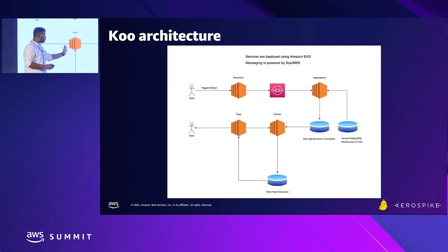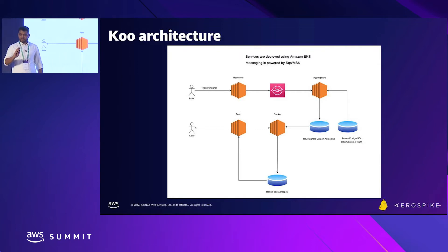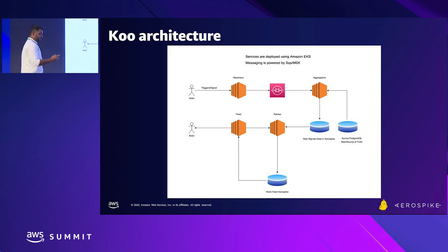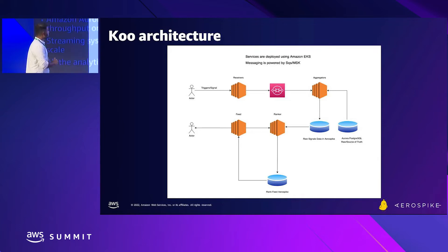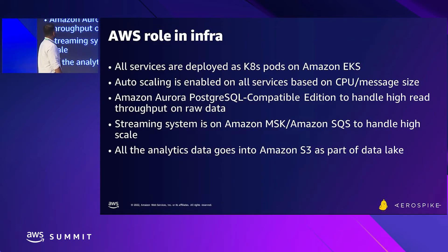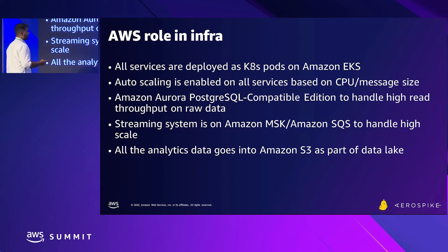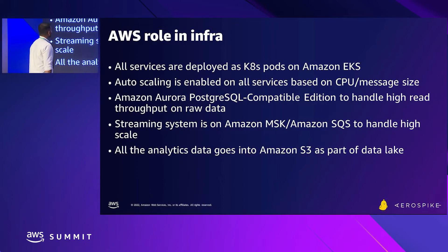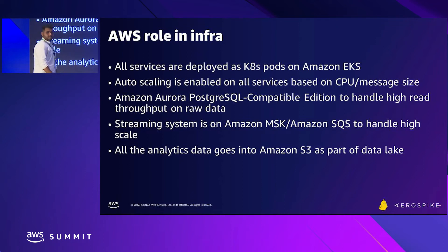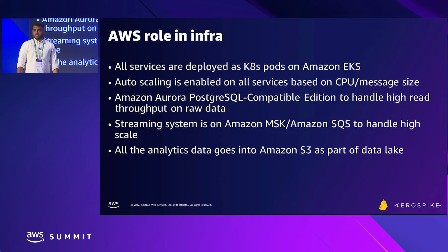The difference between the two Aerospike namespaces: one is all-in-memory, and one is a disk-based hybrid namespace. Once the ranker completes, the feed service displays the data. This is how we achieve near real-time delivery — no asynchronous step — everything happens the moment the user opens the app. That is the USP of the architecture.